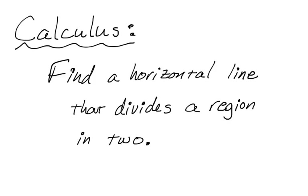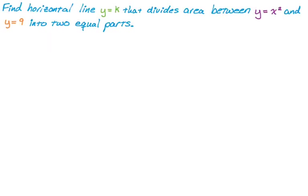In this video, we're going to use calculus to find a horizontal line that divides a region into two equal parts. The problem is to find the horizontal line y equals k that divides the area between y equals x squared and y equals 9 into two equal parts.